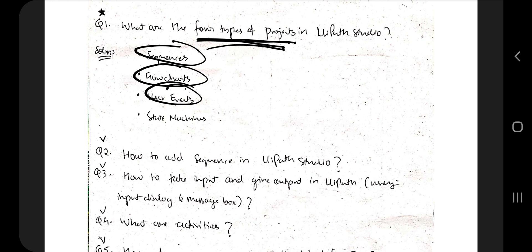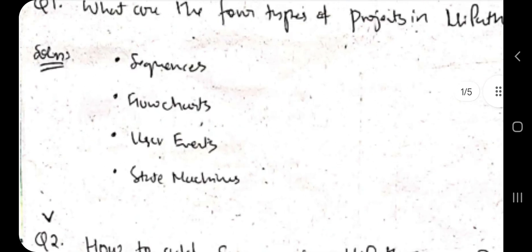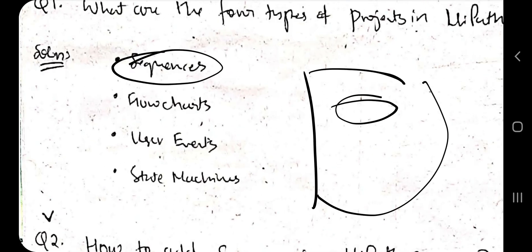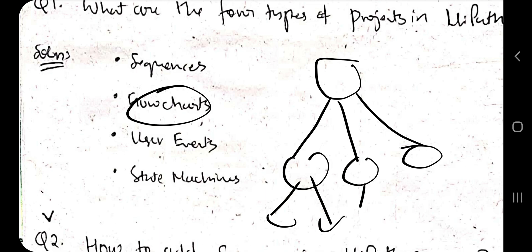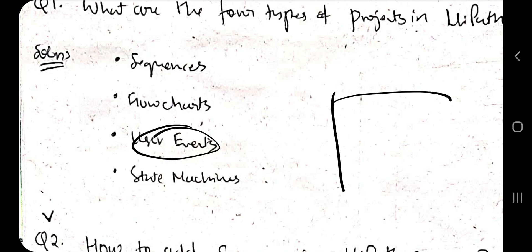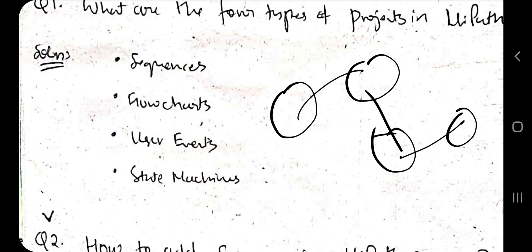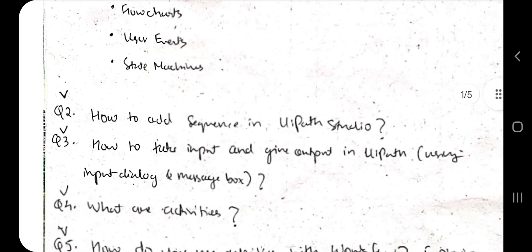Sequences, flowcharts, user events, and state machines. The name itself - you can understand sequence means a sequence of steps will be performed one after the another. Flowchart means based on the decision or different conditions, different things will happen. User event means if you want to perform some particular event. State machine means like in automata we learned, one state to another state, based on the state we are choosing which transition should happen. We'll be diving deep into the first two ones.